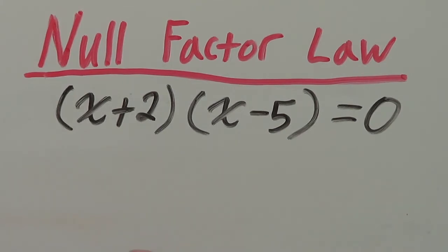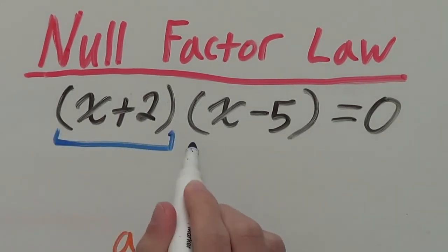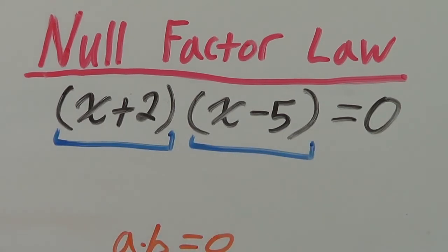The Null Factor Law is where a times b equals zero and either a or b or both are zero. In this case, this or this must be equal to zero.